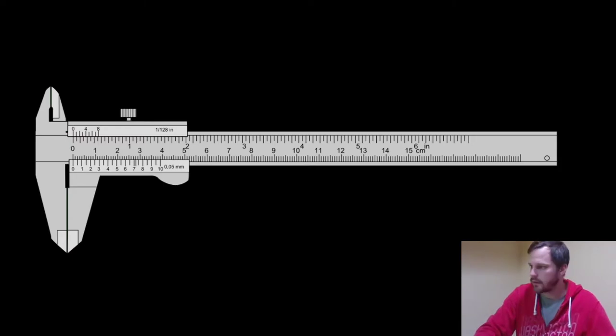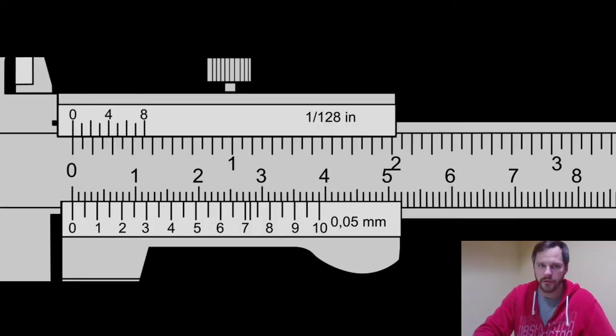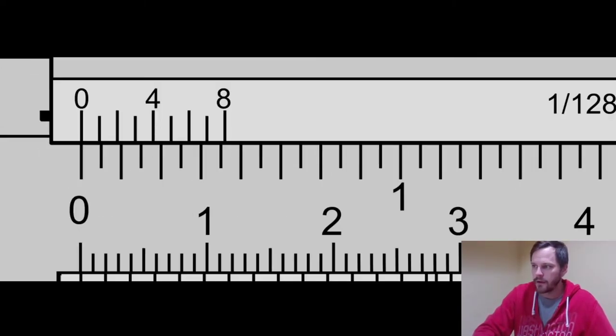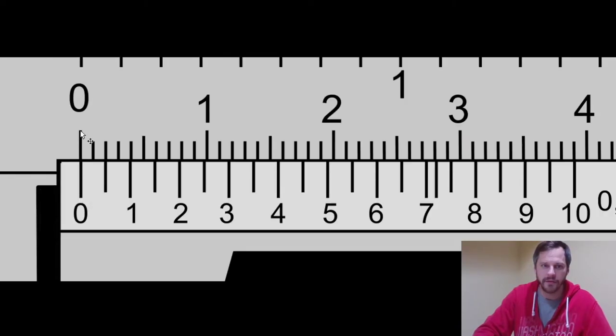So when you close it all the way, zoom in right here. This line right here should line up with this line right here. This zero line right here should line up with this zero line right here.